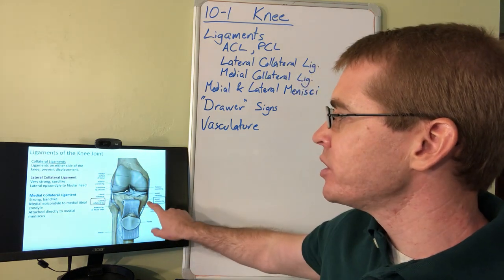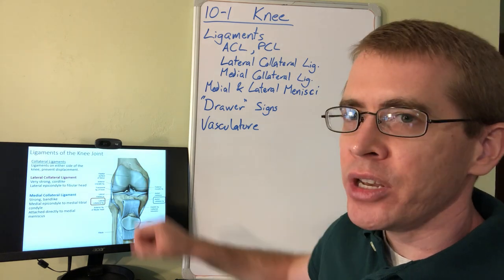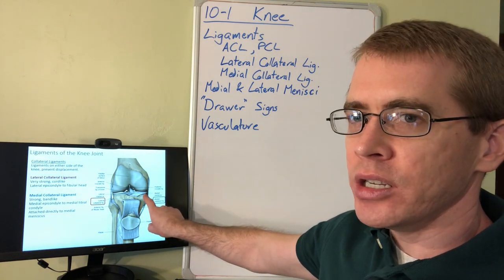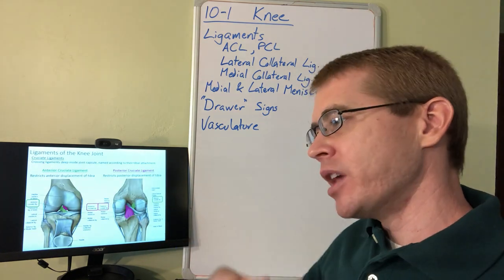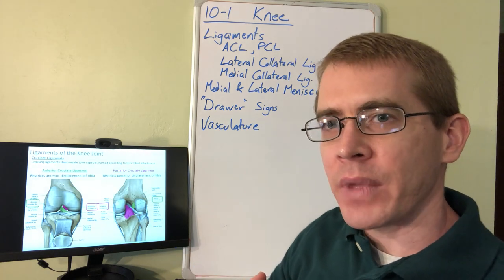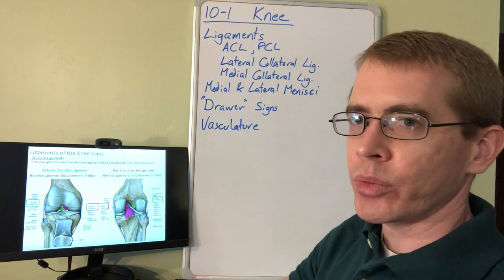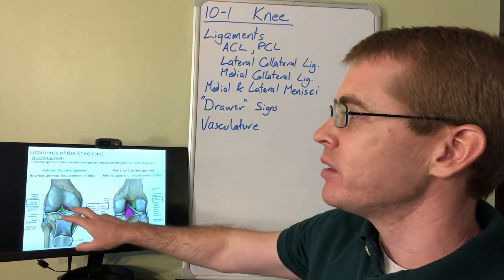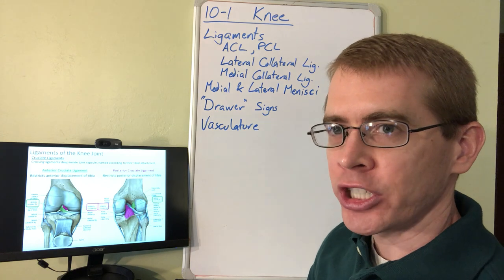The medial collateral ligament also attaches to the medial meniscus within the knee joint, which has some consequences for how the knee joint moves and its structural integrity. Now let's talk about the ligaments inside the knee: the cruciate ligaments.